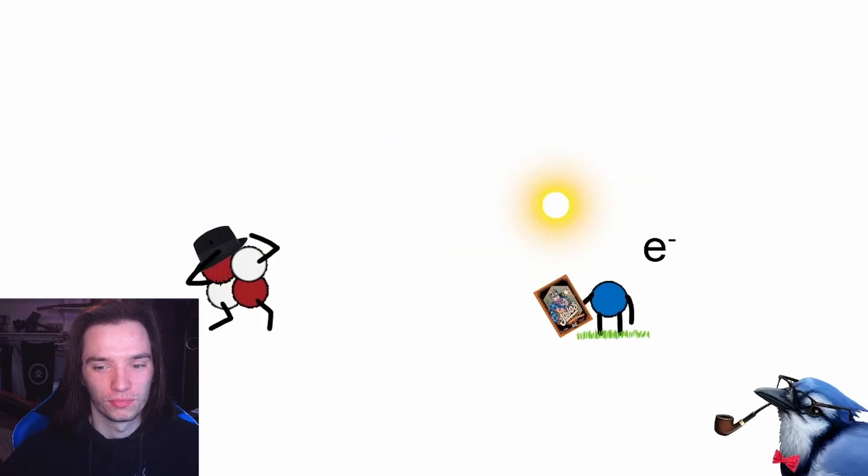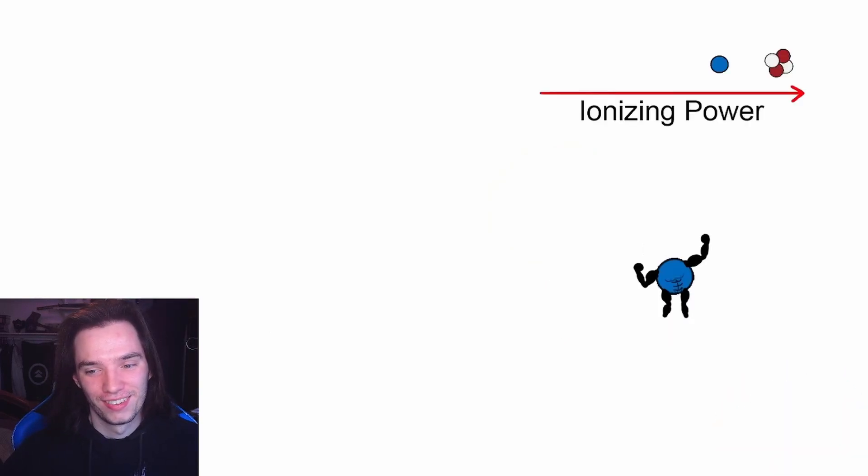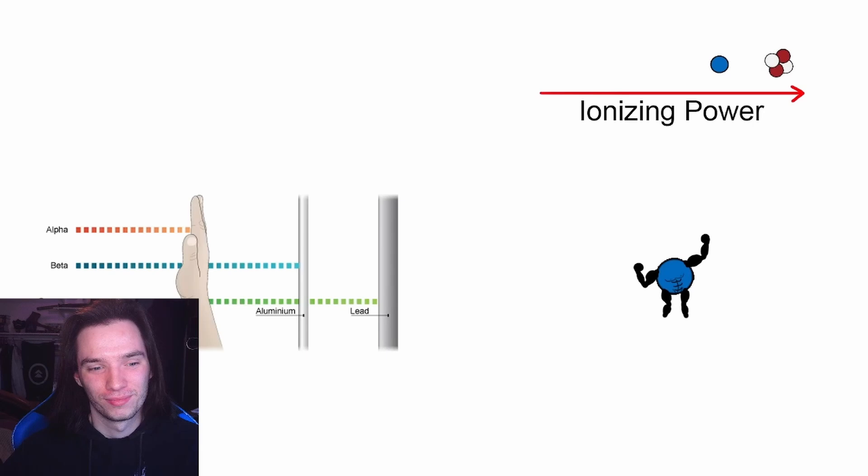Emitted beta particles, which are just electrons, are weebs that aren't as far gone as alpha particles. As they still found time to touch grass every once in a while and therefore are less massive, a bit more in shape, they are the second most ionizing, able to penetrate half an inch of your skin and are stopped with just a thin plate of metal.